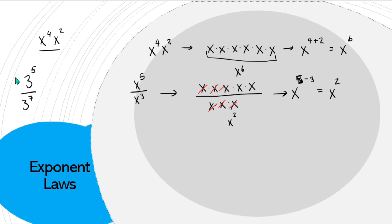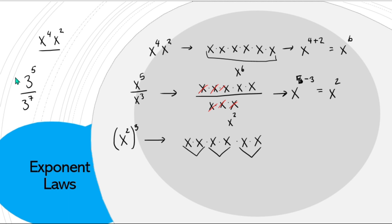Another good exponent law is power of a power. If we had x squared and we cubed that whole thing, let's draw it out. We have x squared multiplied by itself three times — that's x² times x² times x², which makes x⁶. So the exponent law for power of a power: you multiply the exponents.